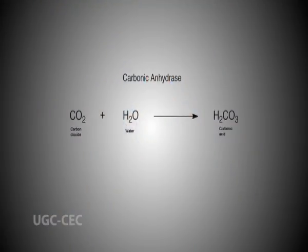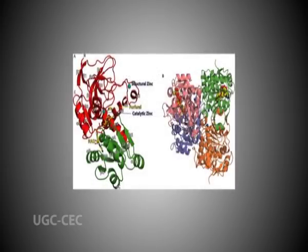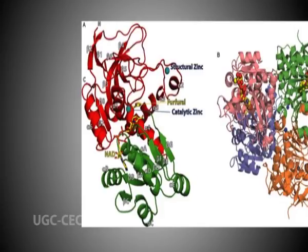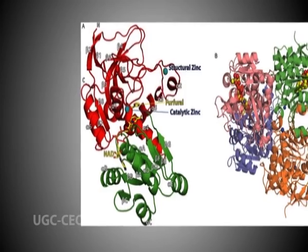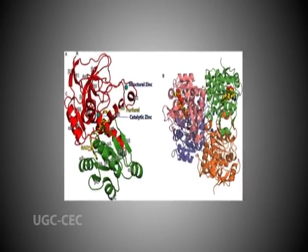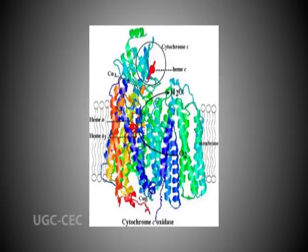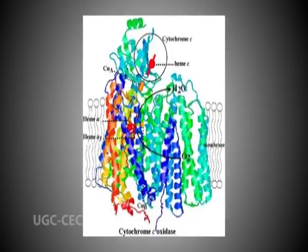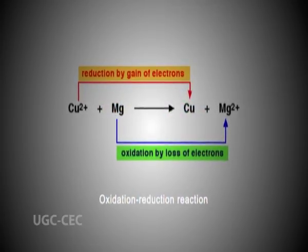One example of an enzyme that contains a cofactor is carbonic anhydrase, which is shown in a ribbon diagram with a zinc cofactor acting as an ionic cofactor or activator bound as part of its active site. This tightly bound ion is usually found in the active site and is involved in catalysis. Another example is cytochrome oxidase, which uses cupric ion as a metal ion activator for oxidation-reduction reactions. Similarly, aldehyde oxidase uses molybdenum and catechol oxidase uses cupric ions. We can use the term metalloenzymes for enzymes that require metal ions, and about one third of all enzymes are metalloenzymes.